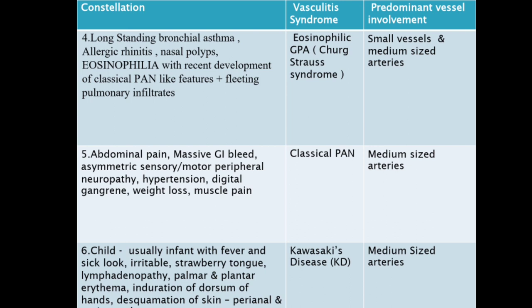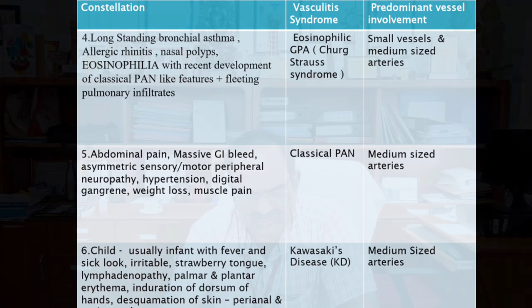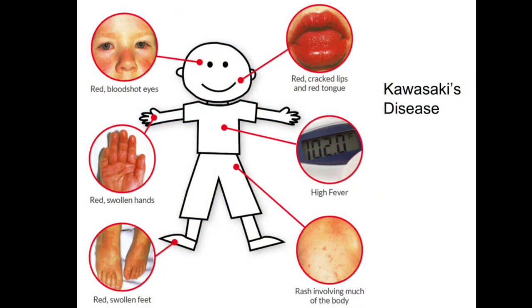The scenario of a child — usually an infant — with fever and sick look, irritable, strawberry tongue, lymphadenopathy, palmar and plantar erythema with induration of the dorsum of hands, desquamation of skin and perianal region — this is basically Kawasaki's disease. Medium size vessel involvement. It is very classically found in India as well. A very large number of patients have been reported from PGI; most of these patients are not diagnosed correctly.